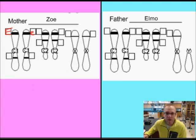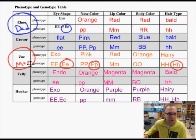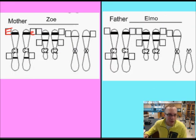The next one is nose color. So I need to go and I need to look up Zoe's nose color, big P, little p. Here's where it's important that you are careful about your writing, indicating which one's a capital letter. So we have a capital P and a lowercase p for Zoe.